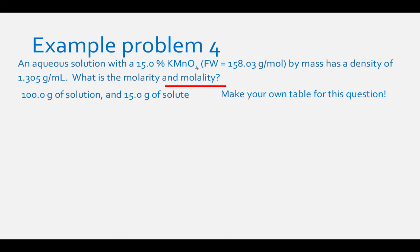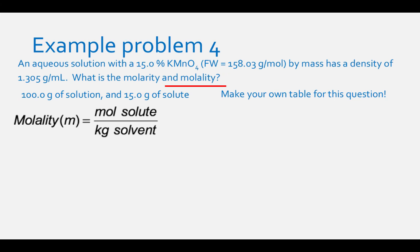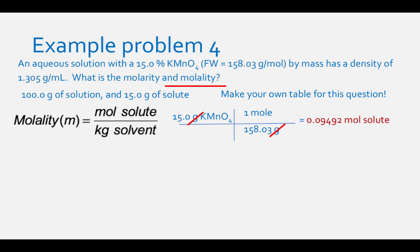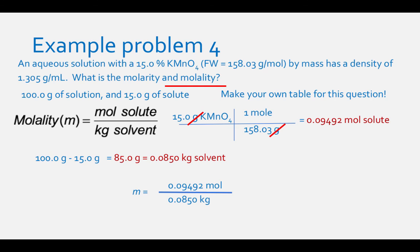To find molality, divide moles of solute by kilograms of solvent. We already know moles of solute: 0.09492. To find kilograms of solvent, subtract grams of solute (15.0 g) from grams of solution (100.0 g): 85.0 g, or 0.0850 kg. Dividing: 0.09492 mol ÷ 0.0850 kg = 1.12 molal.